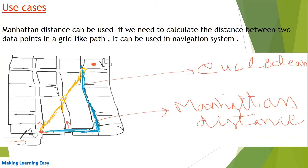Now let's look at the use case of Manhattan distance. Manhattan distance can be used when we need to calculate the distance between two data points in a grid-like path. It can be used in a navigation system. To explain it, I have drawn a diagram of a city where buildings are laid out in the form of squares and the streets intersect at right angles. In this kind of layout, if we move from one point to another, we will travel the Manhattan distance. Suppose we want to move from A to B.